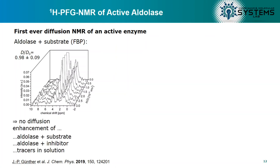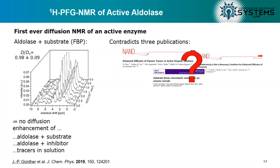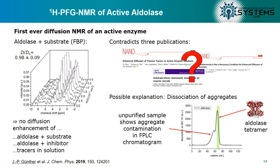We also tested other cases where aldolase was in the presence of an inhibitor — as had been published earlier — and also tracers in solution. In all cases we found no diffusion enhancement, which contradicts several papers published in recent years. We think the explanation may be that there are aggregates in solution during those measurements which then dissociate in the presence of the substrate. We used the tetramer, which is the native state of aldolase, for our experiments, but our FPLC chromatogram showed that there are also a lot of aggregates present in the commercially available enzyme.